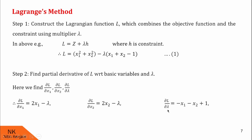Let me show the calculation of ∂L/∂λ. For this, we keep x1 and x2 constant, so x1² and x2² are constants and their derivatives are 0. The derivative of −λx1 is −x1, the derivative of −λx2 is −x2, and the derivative of +λ with respect to lambda is 1. So ∂L/∂λ = −x1 − x2 + 1.